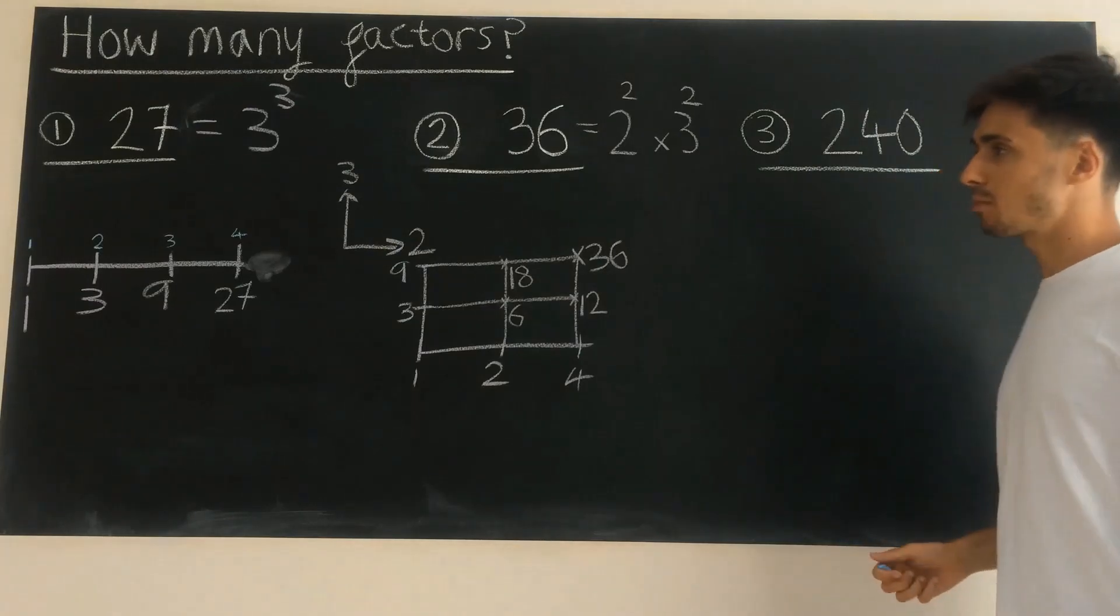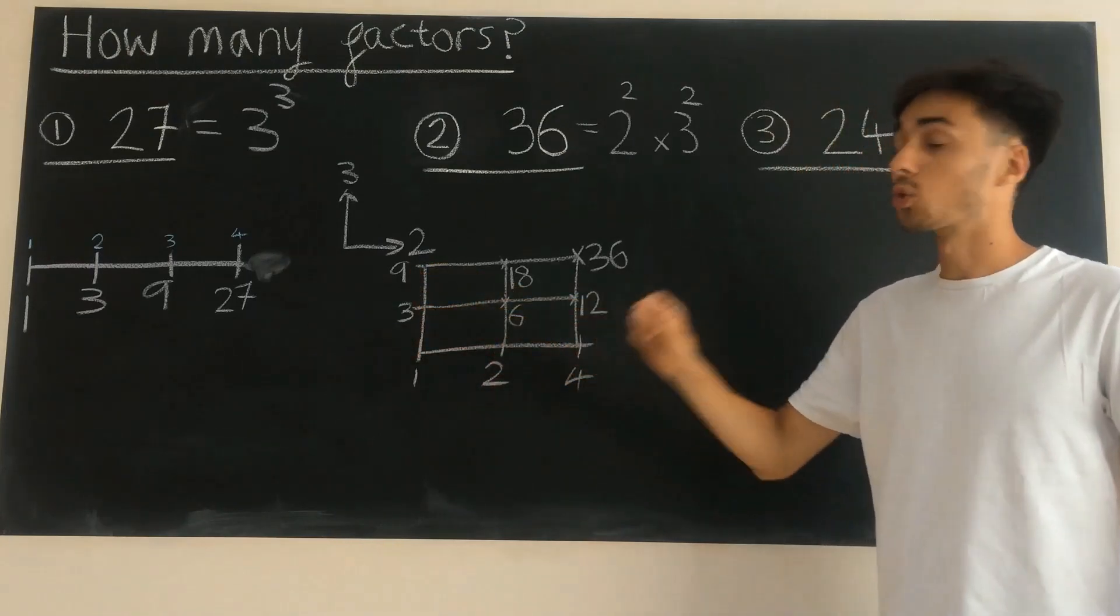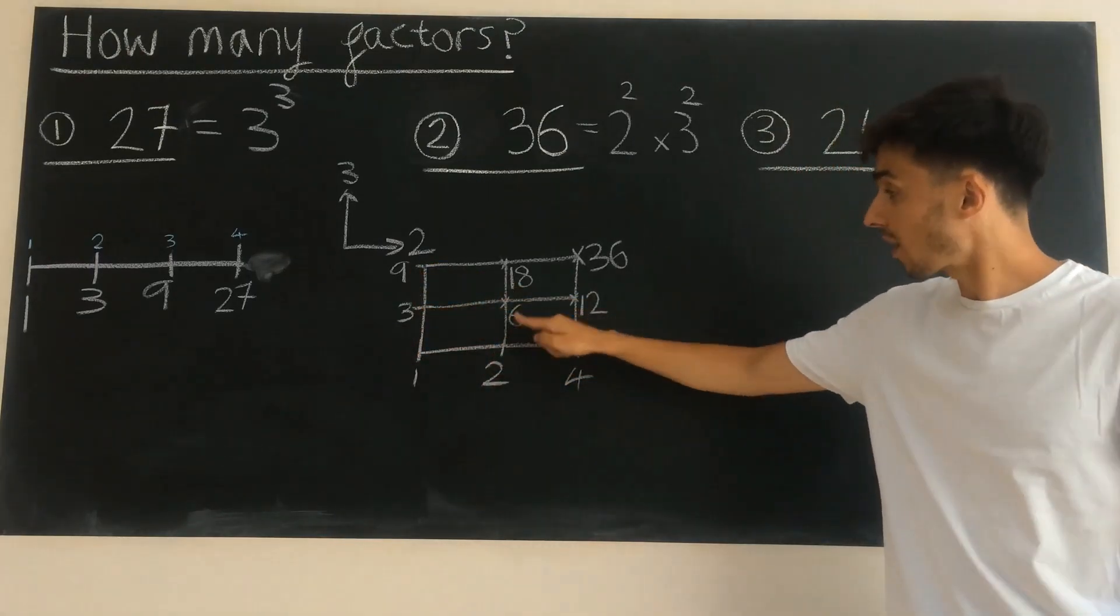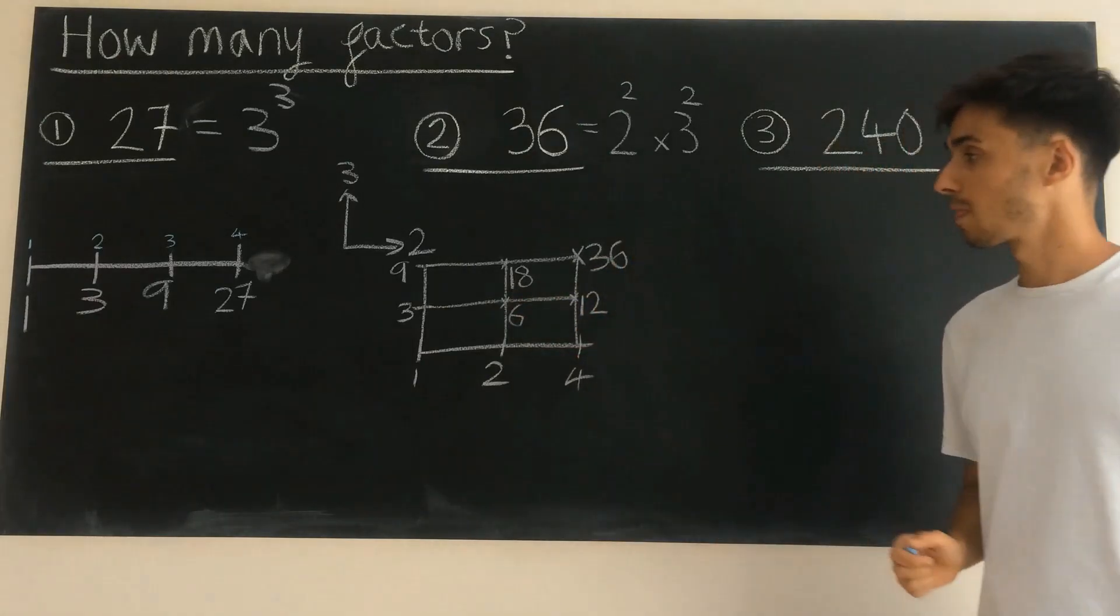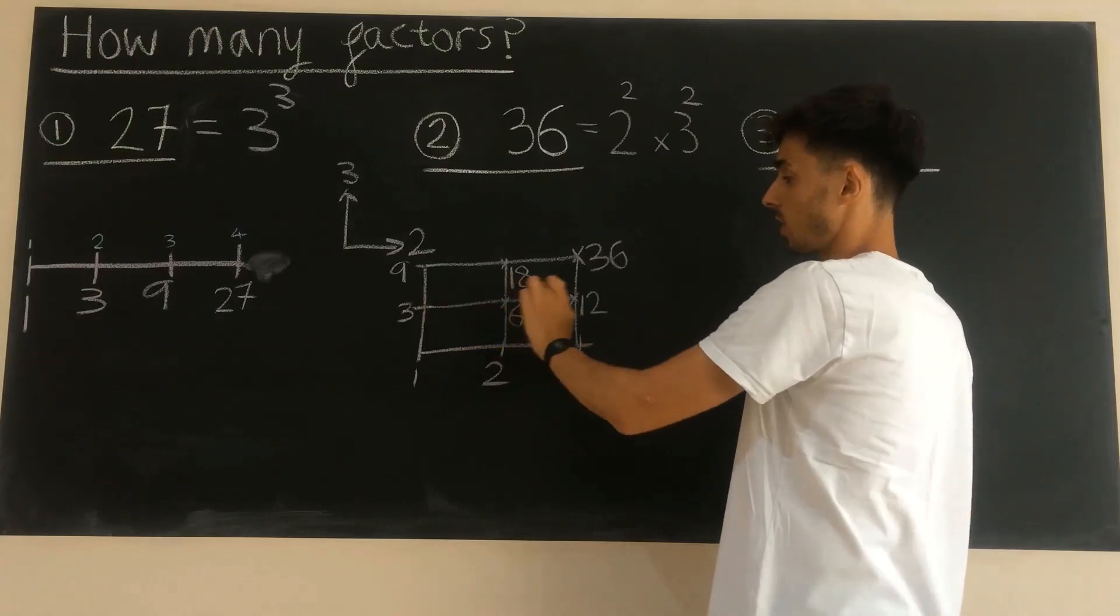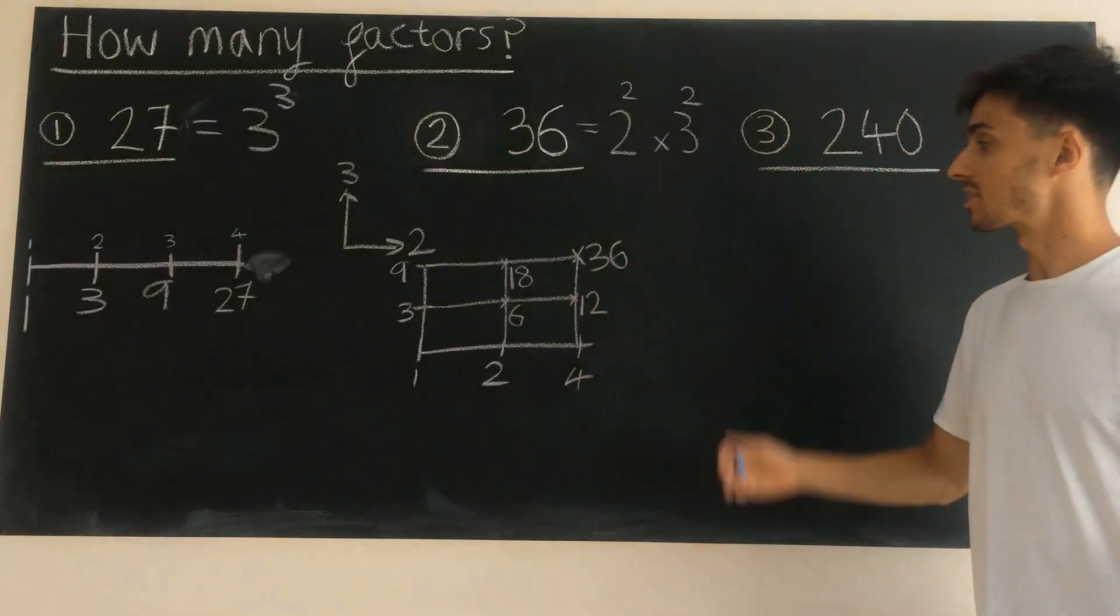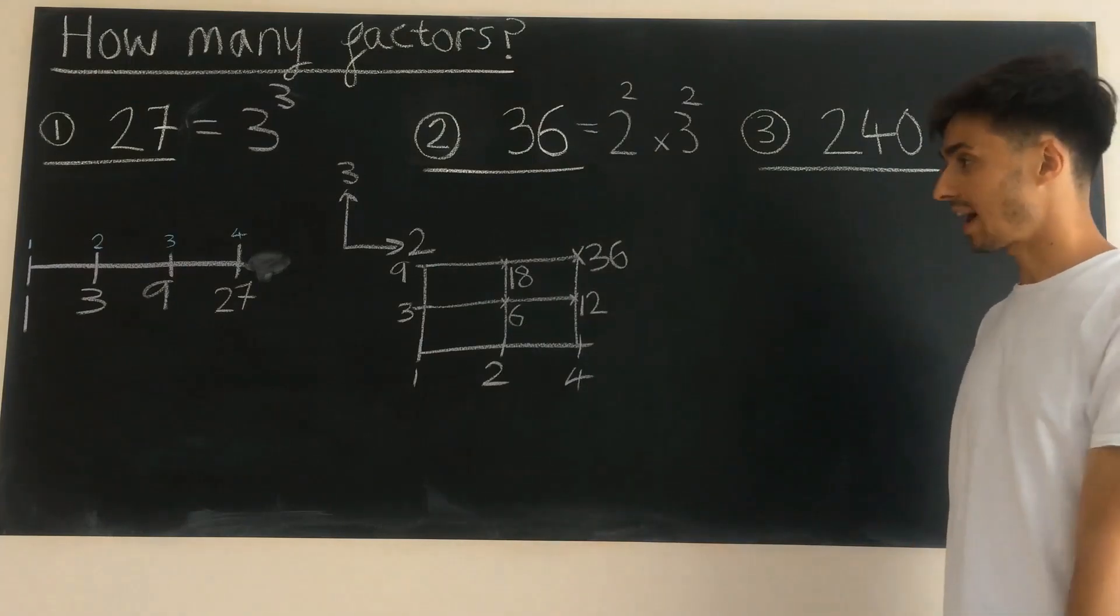Well counting up the number of factors then is really easy. Again, we just count up the number of nodes or the number of meeting points of lines that we see on our graph. So we've got here 1, 2, 3, 4, 5, 6, 7, 8, 9. That means 36 has got 9 factors.